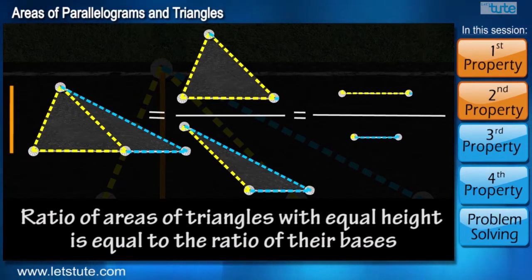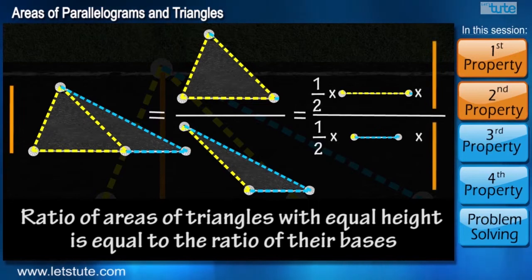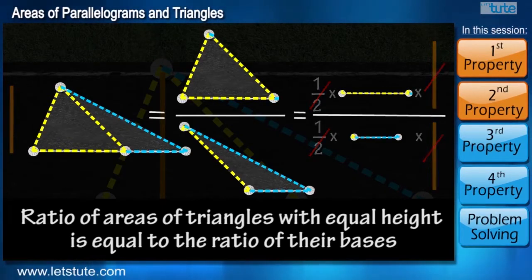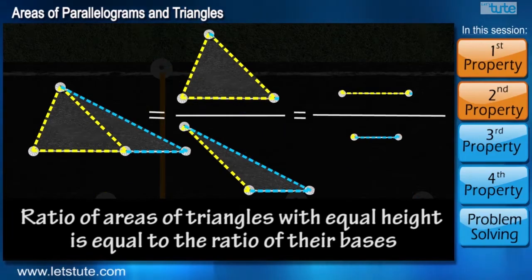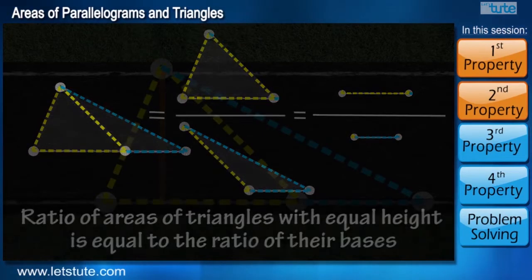Because when we take the ratio of areas, the constant value half and the height will get cancelled out. And the remaining thing will be the ratio of the bases.